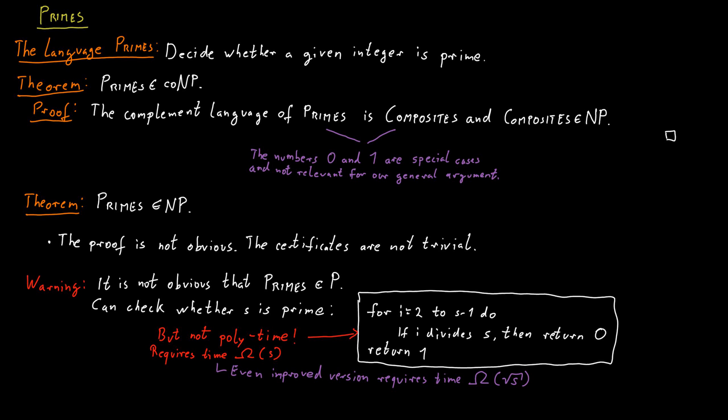Because the number s is presented in our input, but it's encoded in binary. And therefore, it only takes order of log s many bits to encode these numbers. The size of the input here is not s. The size of the input is order log s.